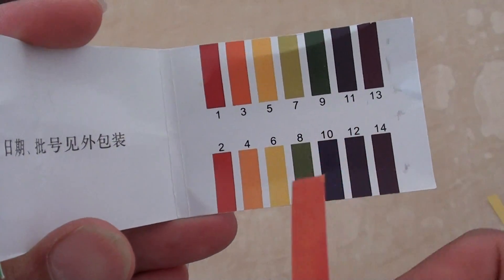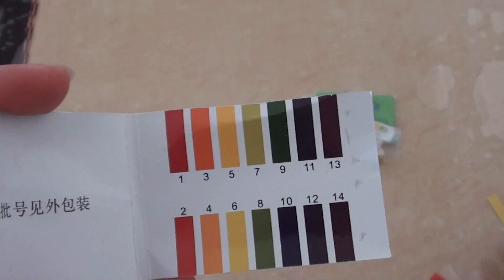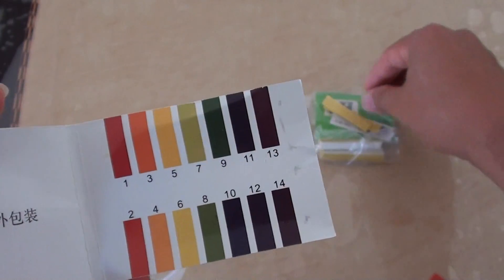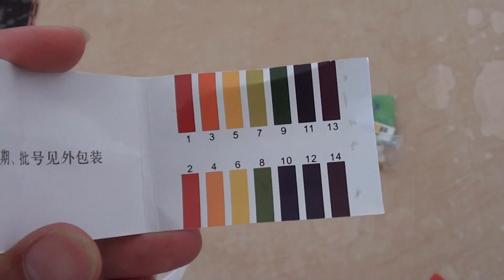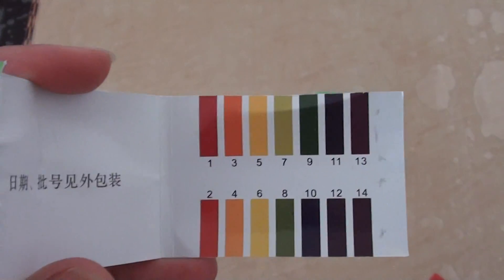Sometimes you get a 7, sometimes you get a 6 or a 5. So ideally, you want to do it a few times a day to get an average result. Also you want to try to do it one hour before food or two hours after food. One in the morning, one in the afternoon, one in the evening.